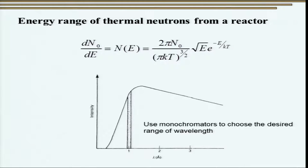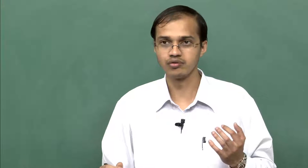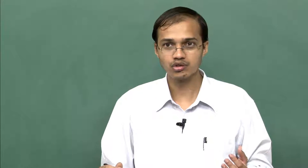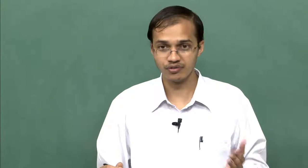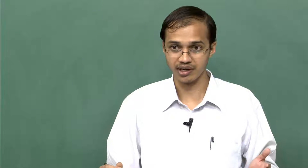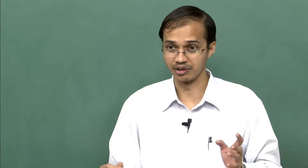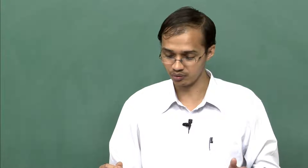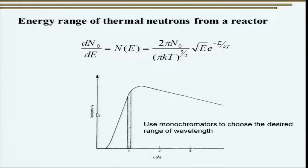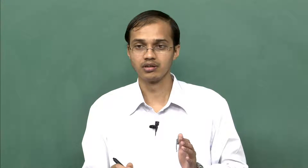From these sources, we get a spectrum of neutrons. Similar to X-rays, the neutrons follow a Maxwell distribution — shown here as an intensity versus wavelength plot. Most of the time we do not need a wide range of energy, so we use monochromators to select only the wavelength of interest for further use.